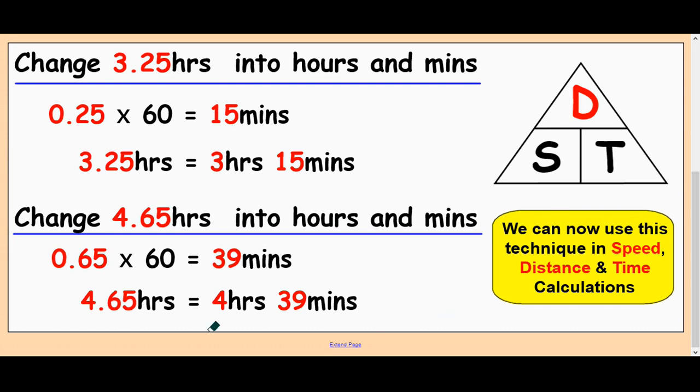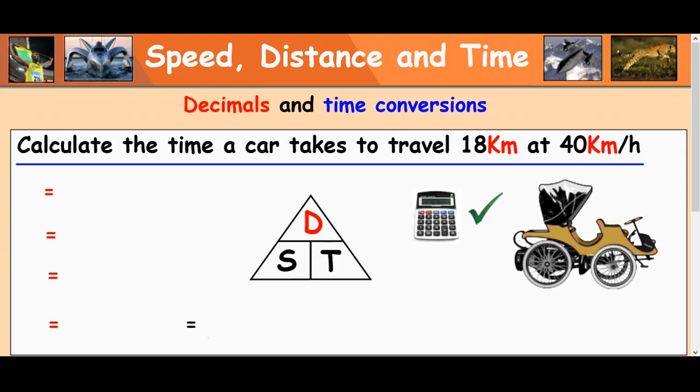Right. We can now use this technique in time calculations. So we'll have a look at a few before you try some yourself. So calculate the time a car takes to travel 18 kilometers at 40 kilometers per hour. So if you count up the T, we've got D over S. So that's your kind of thing there. Time is equal to the distance over speed of your formula.